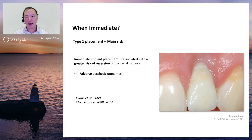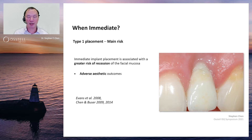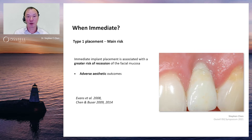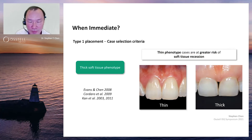We begin with immediate implant placement and ask the question: when is it appropriate? To answer this, we need to understand the main risk with immediate implant placement in the maxillary anterior region. Through consensus conferences and studies on aesthetic outcomes, it has been identified that the main risk for single tooth replacements is recession of the mid-facial mucosa, which is quite a common occurrence.